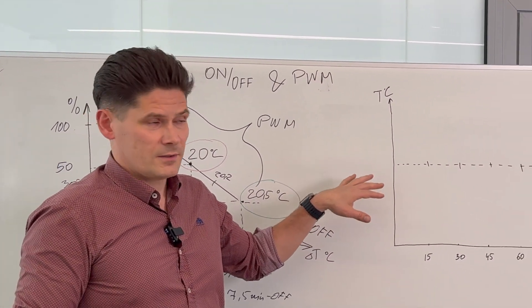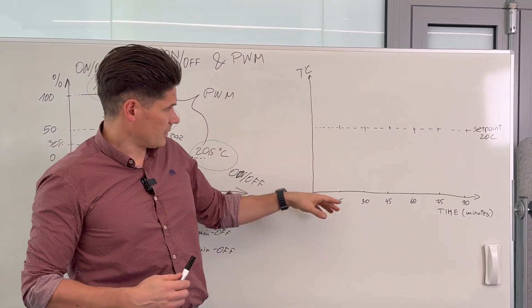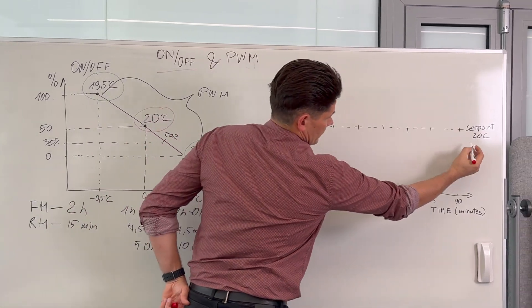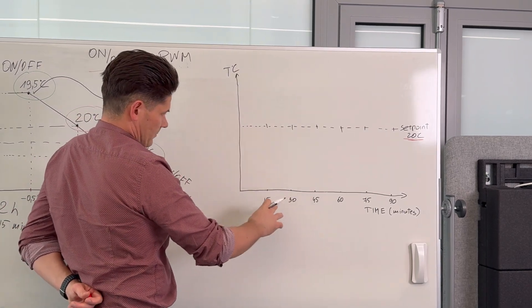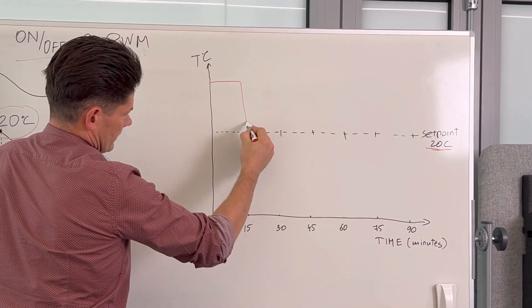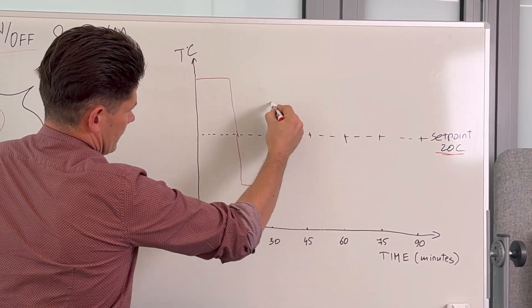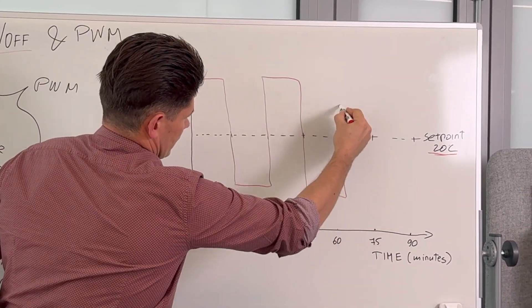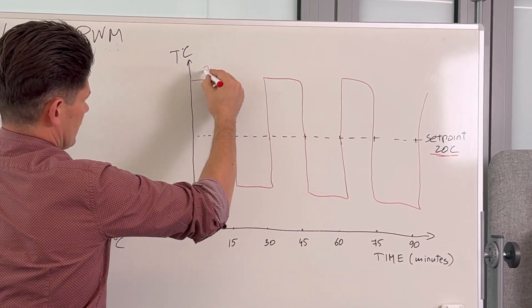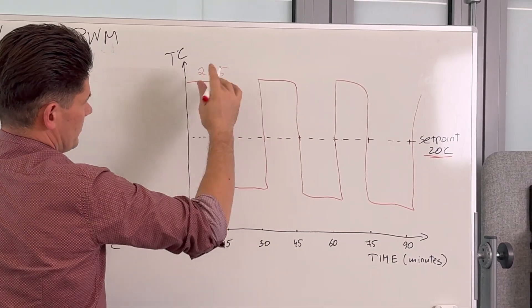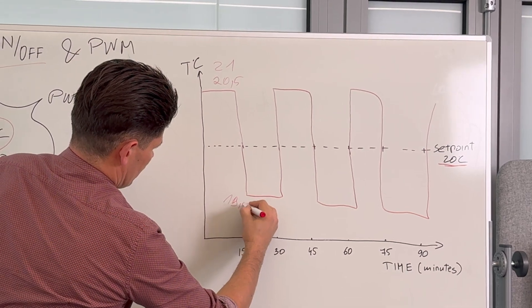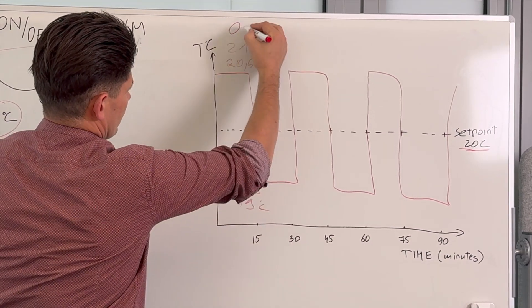I can show how temperature fluctuates in reality using on/off versus pulse width modulation control. With on/off control: the set point is 20 degrees. The actuator switches on and off repeatedly, and the temperature swings - it might reach 21 degrees or more on the high side, and maybe 19 or 19.5 degrees on the low side. This is how on/off regulation looks.